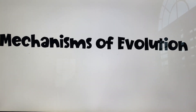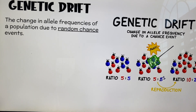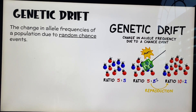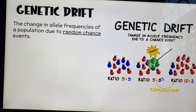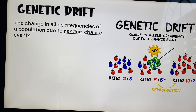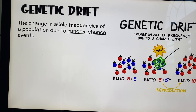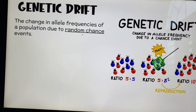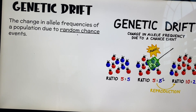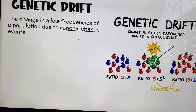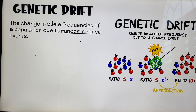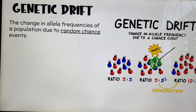This is a short on the mechanisms of evolution. The first one we're going to talk about is a broad topic called genetic drift. All it is, is when there is an allele frequency change that is due to random chance. Random means it's not planned — it just happens randomly.